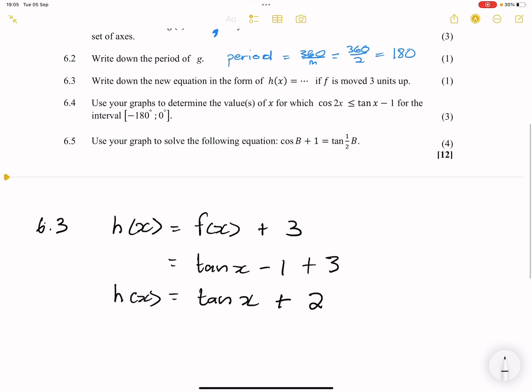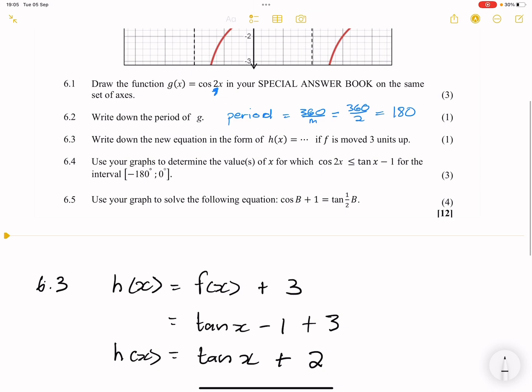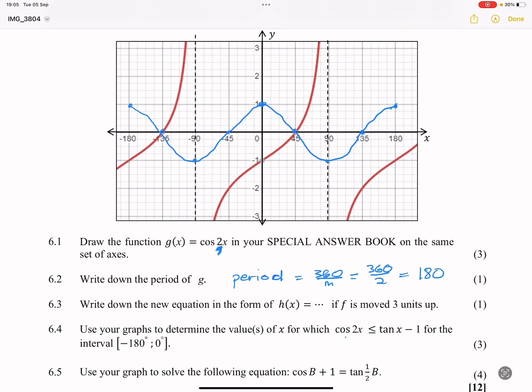The next question, they say to us, use your graphs to determine the values of x for which cos(2x) must be less than or equal to tan(x) - 1 for the interval -180° to 0. Now, in this case, every time they ask us these questions, they are simply saying, where is our cos graph beneath or below that tan graph, between -180° and 0. We're going to have to go to our graph and see where does that occur.